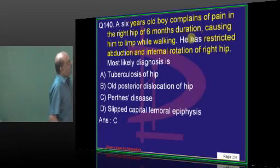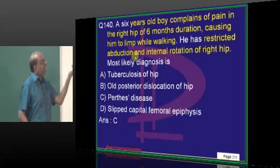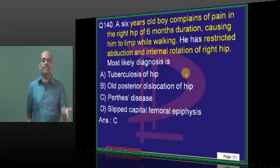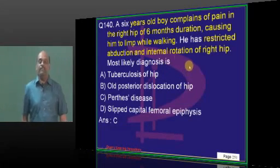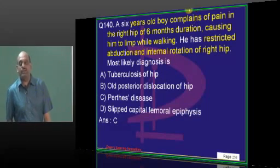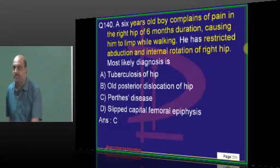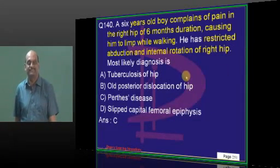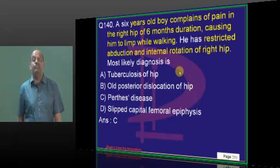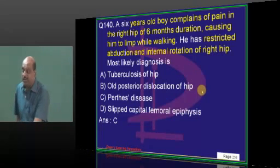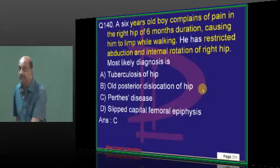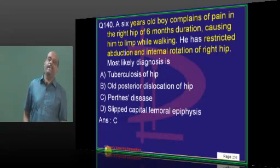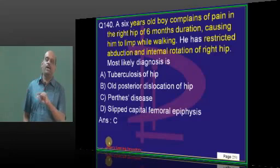6-year-old, right hip pain, restricted abduction, internal rotation. Even before reading the entire question, your eyes should be looking for Perthes. If your eyes are not looking for Perthes and you are guessing in the exam hall — out.